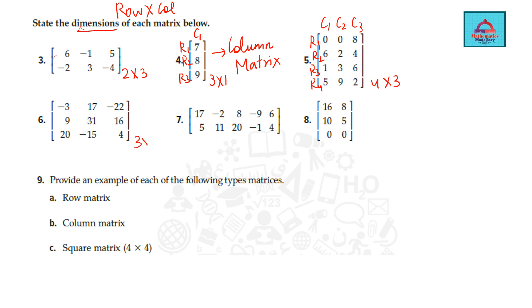Then 2 rows, 1, 2, 3, 4, 5. So 2 cross 5. And 3 cross 2. These are the dimensions of each matrix.